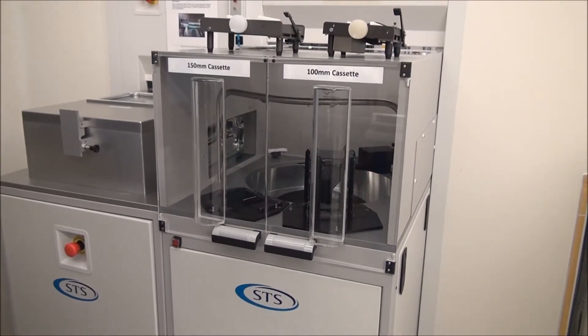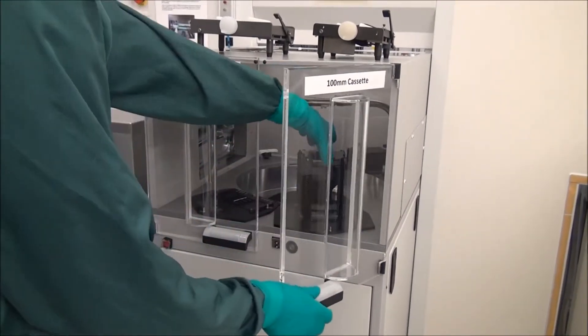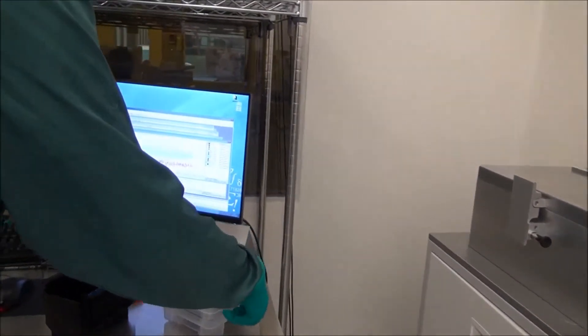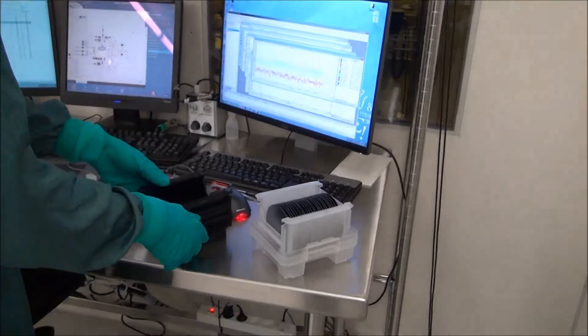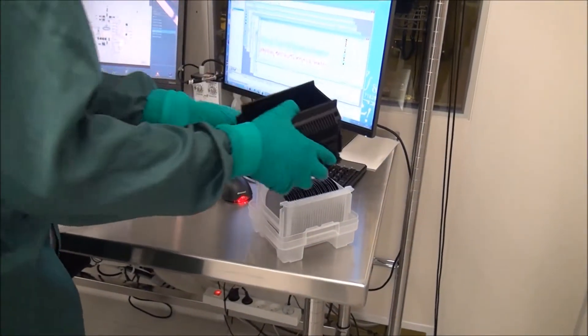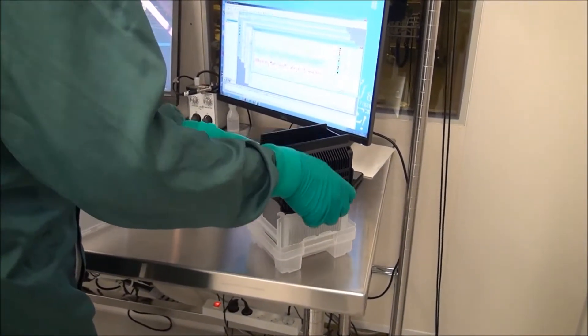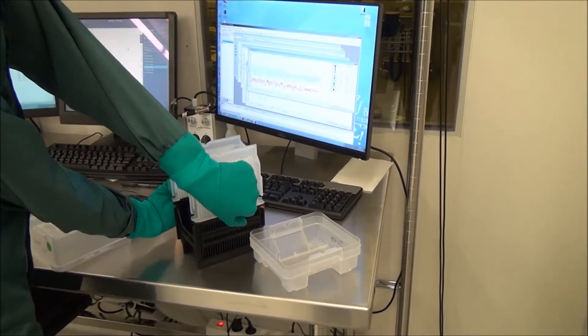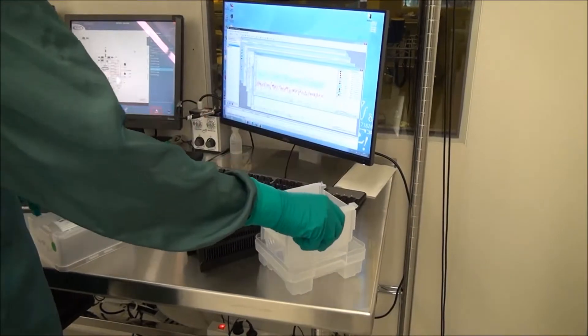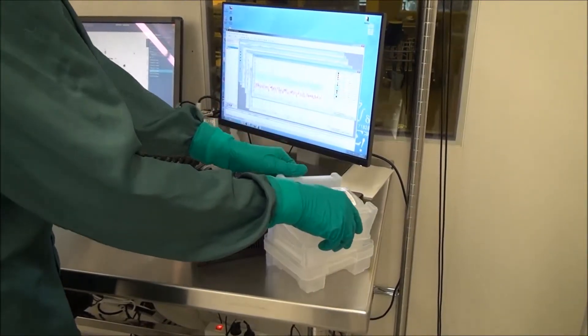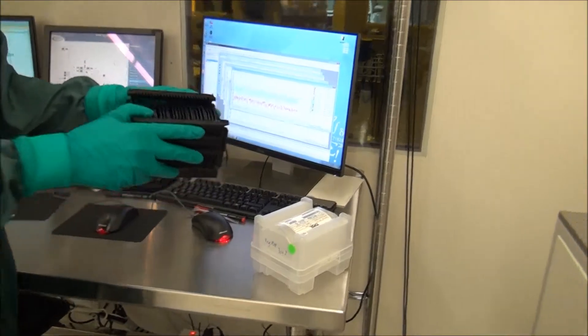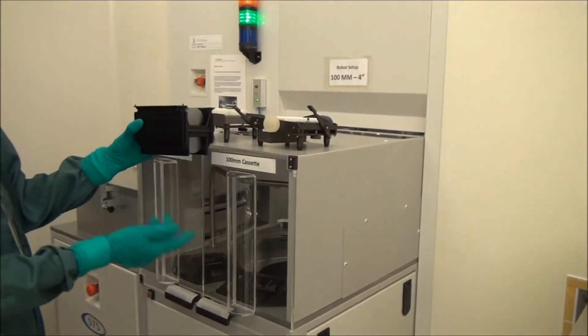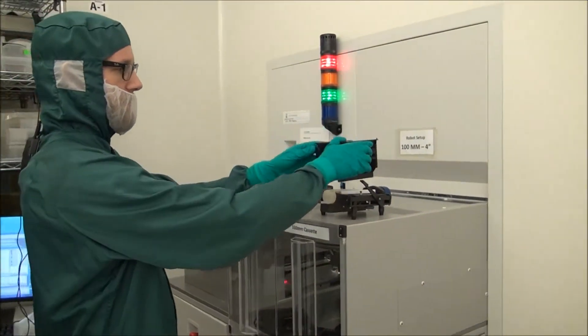To load wafers to the cassette loader, you take out the cassette. Transfer the wafers to the dedicated cassette. You should only use this black cassette for the cassette loader.